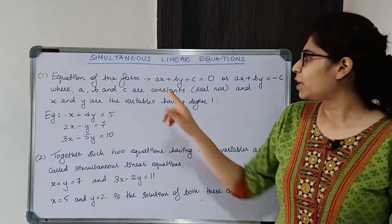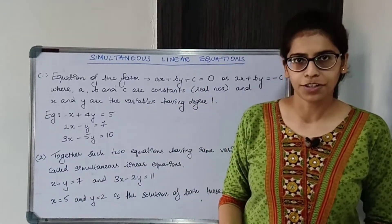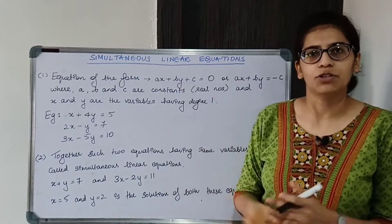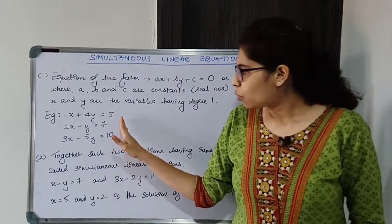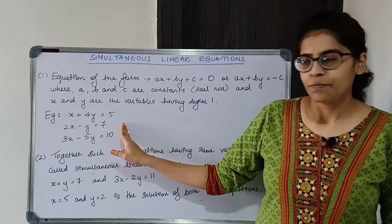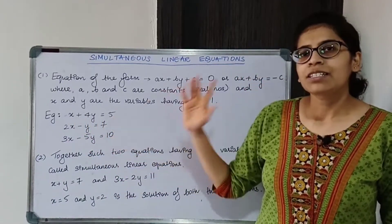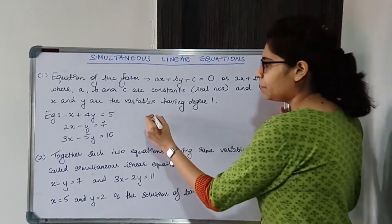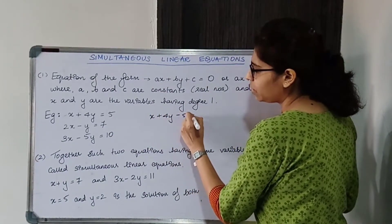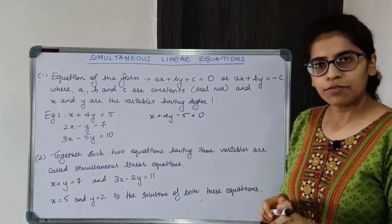So A, B, and C are constants; X and Y are variables having degree 1. This is the standard form of the linear equation. Here are some examples of linear equations. X plus 4Y equal to 5 — in standard form, it will be X plus 4Y minus 5 equal to 0.